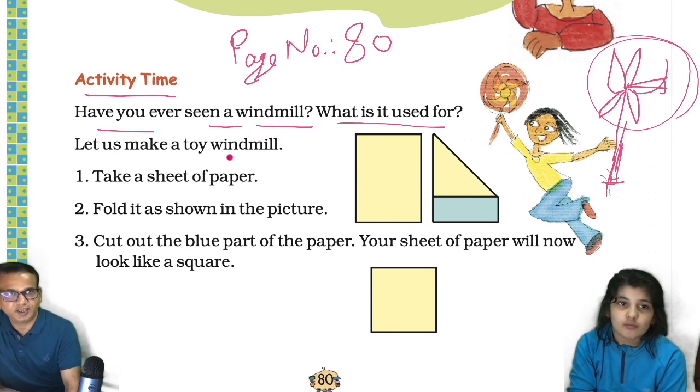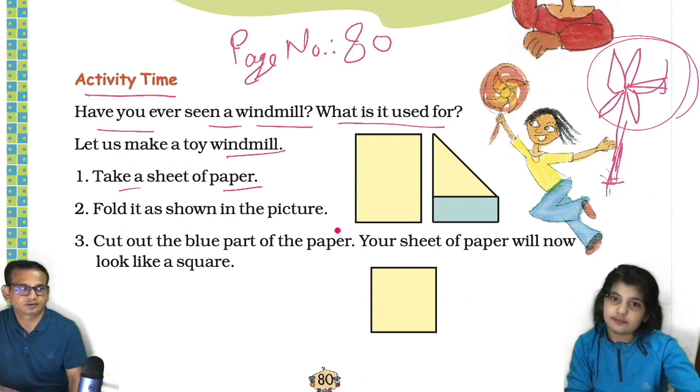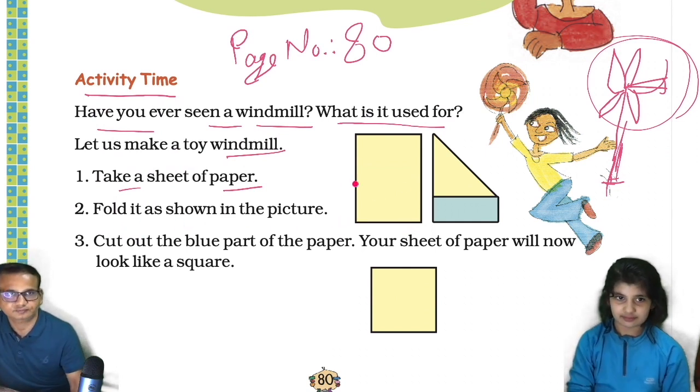Let us make a toy windmill. Have you ever made? No. So let's make it. Take a sheet of paper. Fold it as shown in the picture. Oh you already done? Like this you have to fold it.